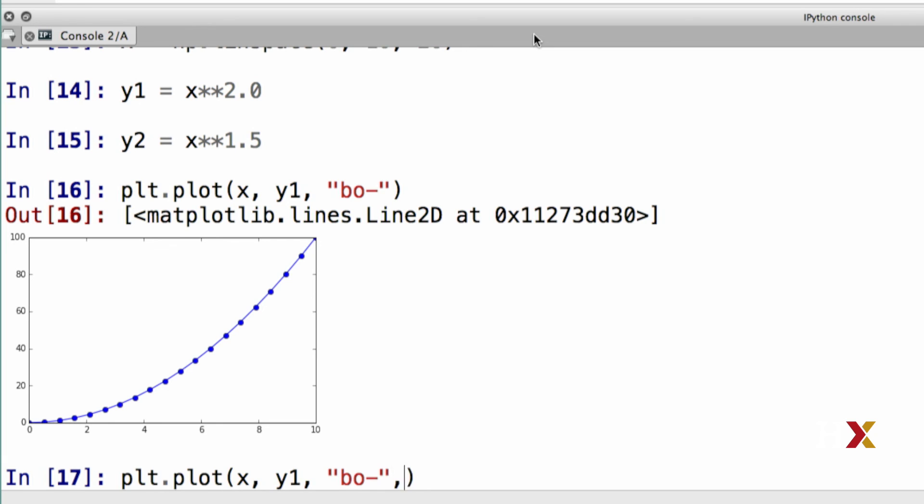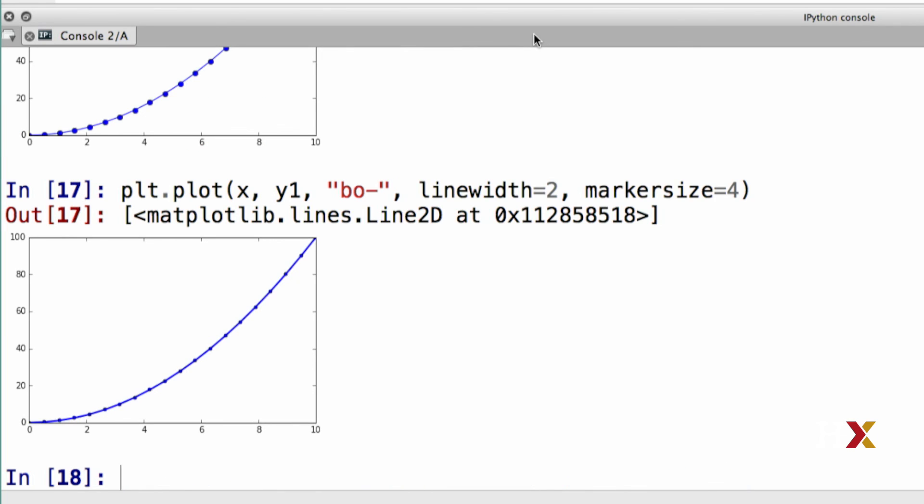We can now add our keyword arguments to this function call. I can specify line width. I'm going to set it to 2 in this case. I'm going to also specify marker size, which I'm going to set to 4. And in this case, you'll see that the line width has changed, and the size of the markers has also changed. If I would prefer larger markers, I could set marker size to 12, and again, the effect is apparent.